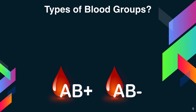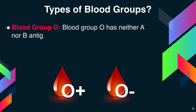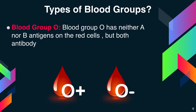Next is blood group O. Blood group O is the universal donor and can donate blood to anyone. O is classified into O positive based on the presence of Rh factor and O negative based on the absence of Rh factor.